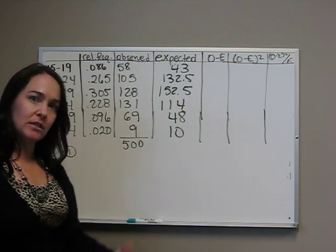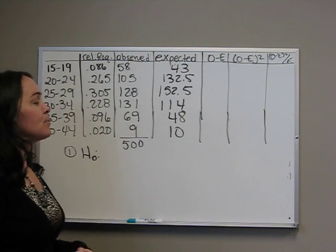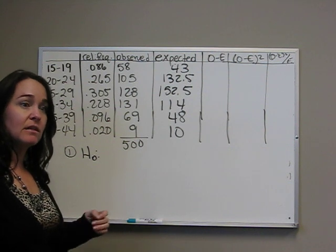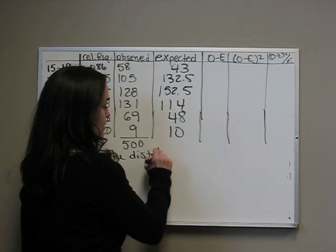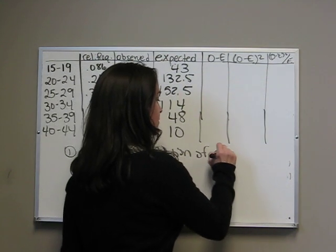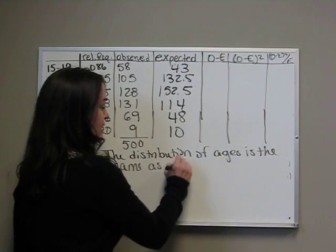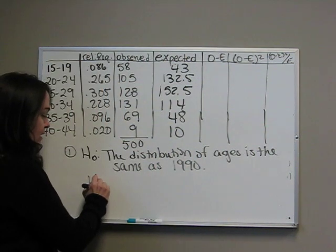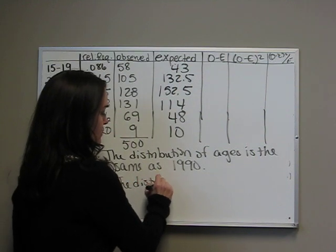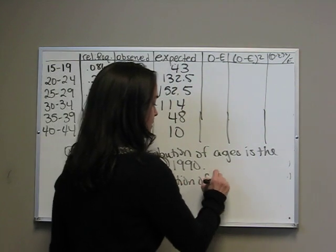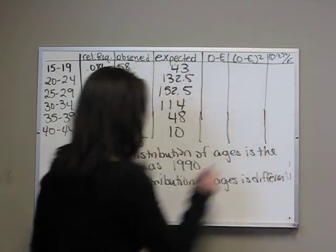Since the assumptions are met, we still have those six basic steps. We have the null and the alternative being the first step. Remember that the null in the goodness fit test is that the distribution is the same. So the distribution of ages is the same as 1990. The alternative then would be that it's different. The distribution of ages is different from 1990.